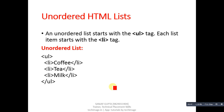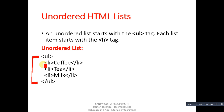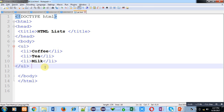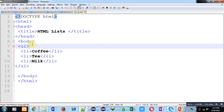First we are going to discuss unordered HTML lists. An unordered list starts with a ul tag, and each list item starts with the li tag. ul stands for unordered list. If you want to mention any item, you have to use the list item tag. Now moving on to the example — I am implementing this in Notepad++ editor, and you can see the unordered list implemented here.